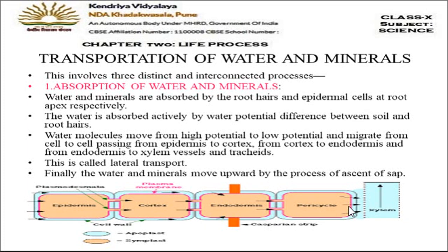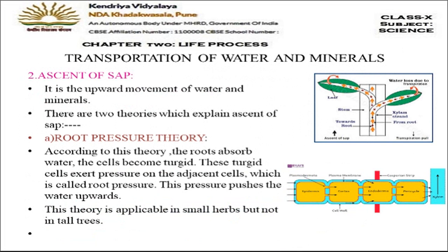When water reaches the xylem it moves upward by the process called ascent of sap, which simply means the upward movement of water. You can see in the diagram how water moves upward from the root through the xylem to the leaves and all branches. There are two theories to explain this ascent of sap.